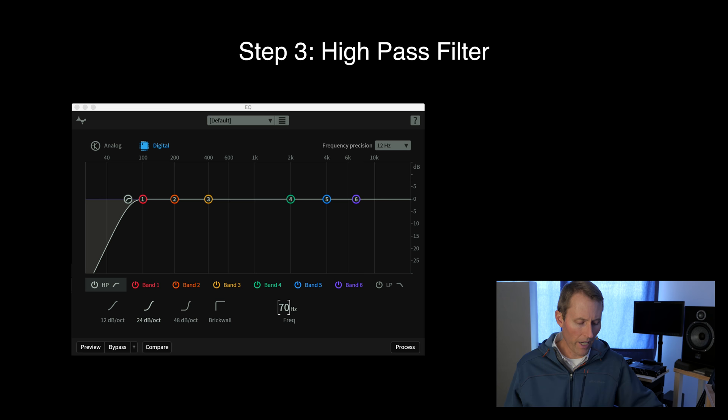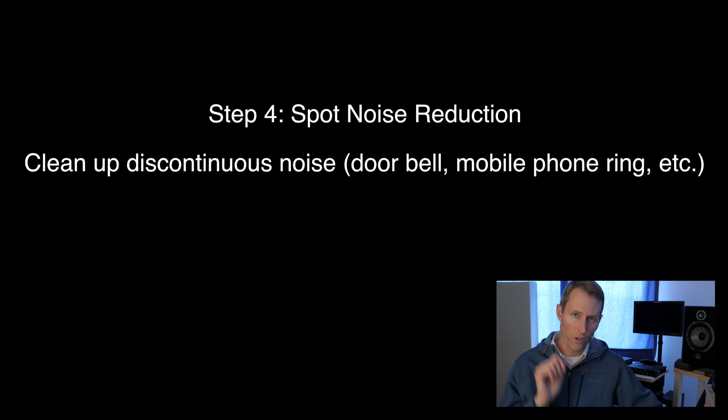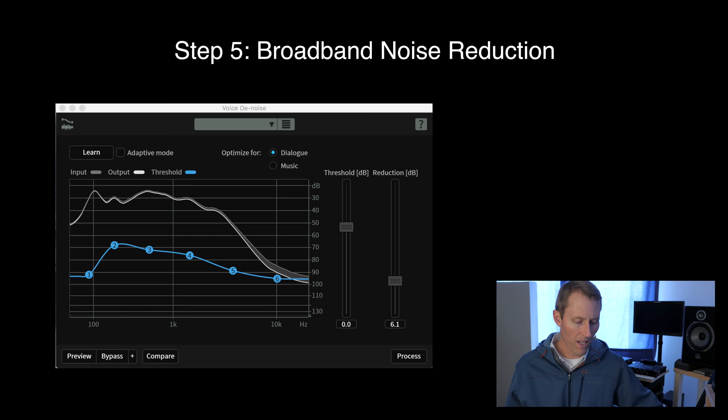Generally I'm applying a high-pass filter somewhere around 70 hertz. Then spot noise reduction — if there are individual discontinuous sounds, like a doorbell, a cell phone ringing, or a door squeaking, and you don't want them in there, those are the things to remove first. In an episode a couple of weeks ago, we demonstrated how to do that, so I'll put a link for that.